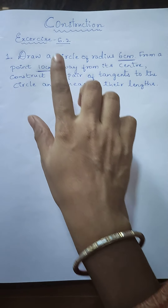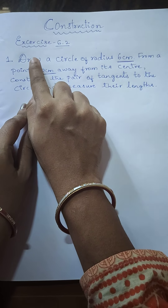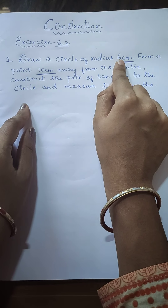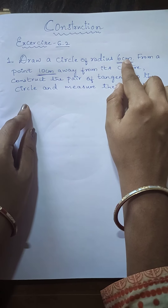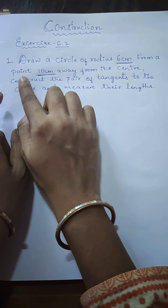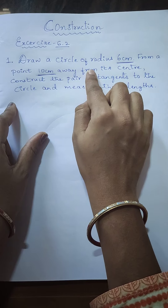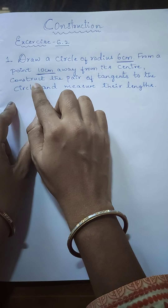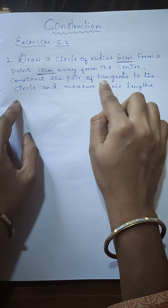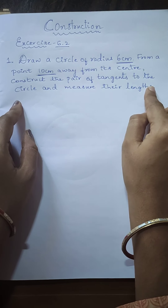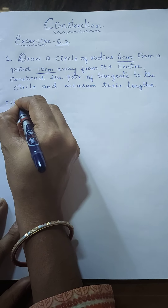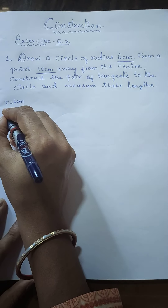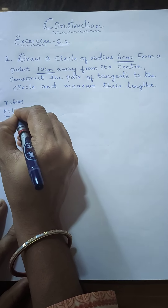Let us move on to the first question. The question is: draw a circle of radius 6 cm. From a point 10 cm away from its center, construct the pair of tangents to the circle and measure their lengths. So let us write the data: radius = 6 cm, and the point is 10 cm from the center.